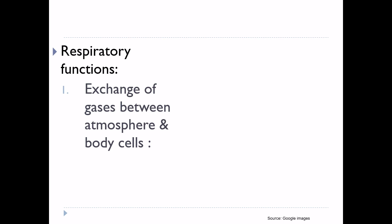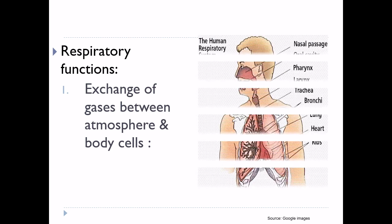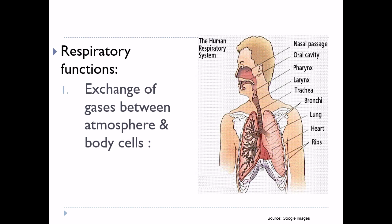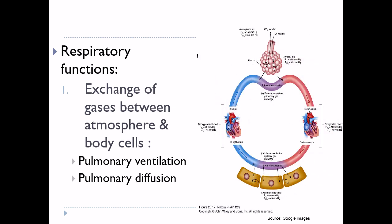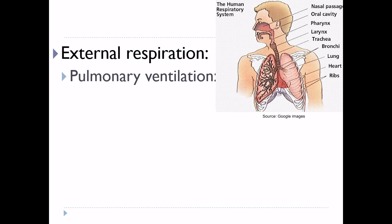Starting with the respiratory function. First and foremost, the respiratory function is exchange of gases between atmosphere and body cells, which includes three processes: pulmonary ventilation, pulmonary diffusion, and transport of gases between blood and body cells. Pulmonary ventilation is the exchange of gases between atmosphere and lung alveoli.